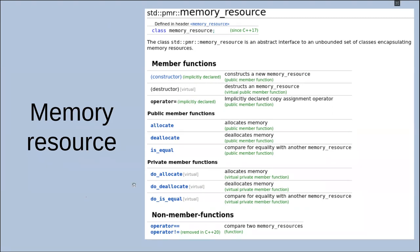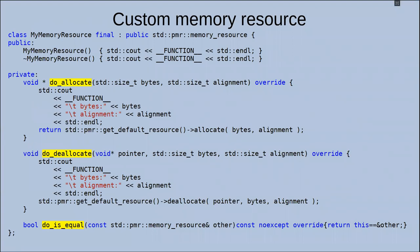Let's create a custom memory resource. We need just to write functions: do_allocate, do_deallocate, and do_is_equal. Those functions look similar to std::allocator, but now we don't depend on type and return void. So in std::allocator, we create a new class for each type and generate new code, but they do the same. And now we don't depend on type.